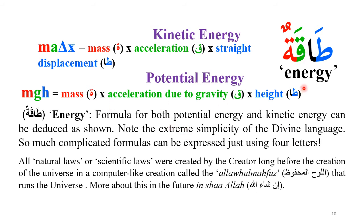For kinetic energy, the Ta Marbuta is mass, Qaf is acceleration, and Ta can also mean straight displacement — Tiwalun means something straight, a straight-line displacement. So from just the letters of Taqatun you can get the formula for both kinetic and potential energy.